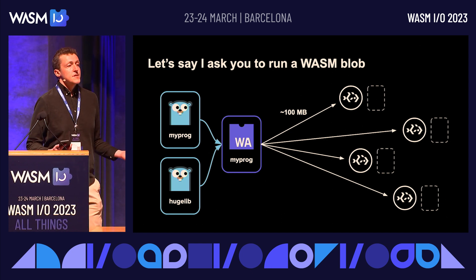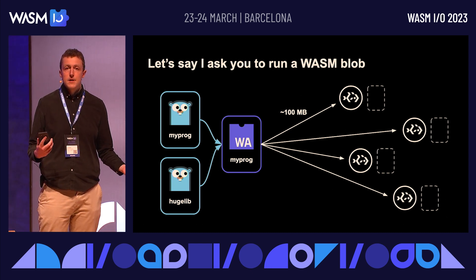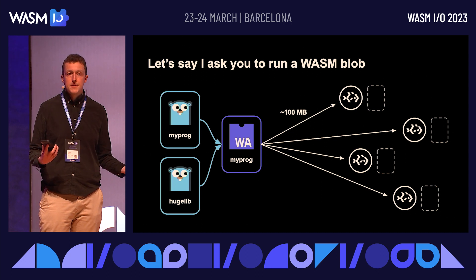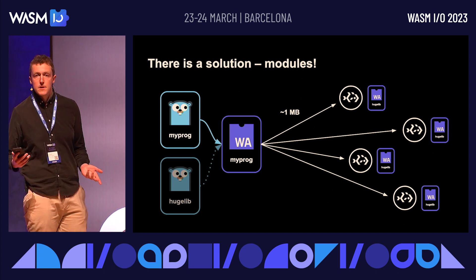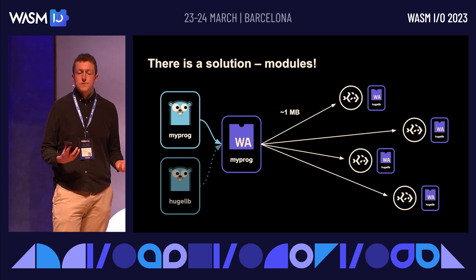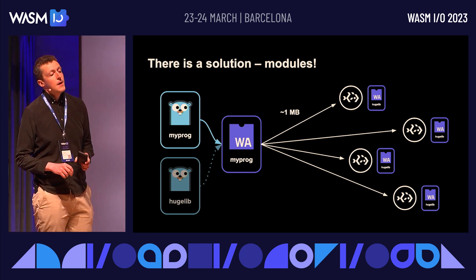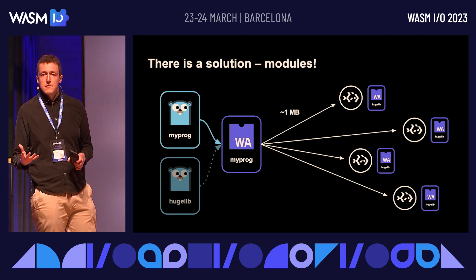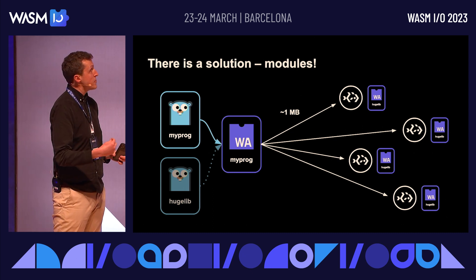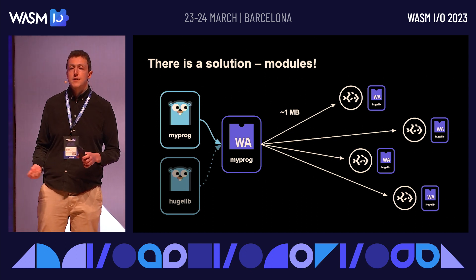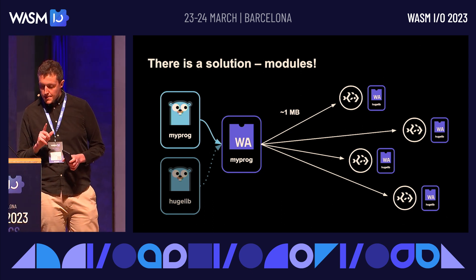We have solutions to this problem already. If I give you a Python script, I don't give you all the code you need to run it — I just give you the script, tell you the dependencies, and then you go and download them. In WASM, we have a similar situation. We have modules, so my module can ask for stuff from other modules. This means we no longer need to distribute huge libraries every time — we can distribute smaller programs and the nodes can dynamically link and run the WASM.